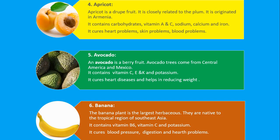Number 5. Avocado. An avocado is a berry fruit. Avocado trees come from Central America and Mexico. It contains vitamin C, B and K and potassium. It cures heart diseases and helps in reducing weight.